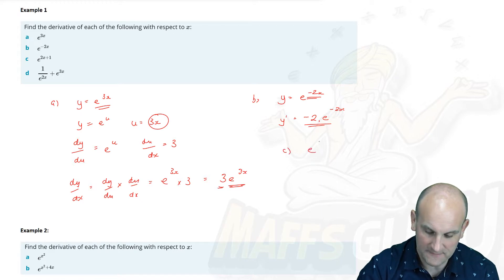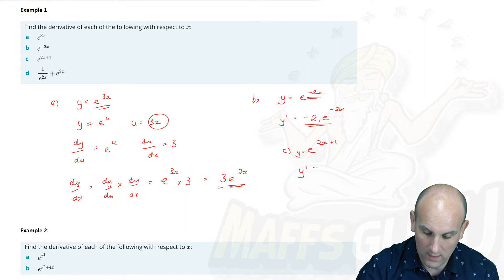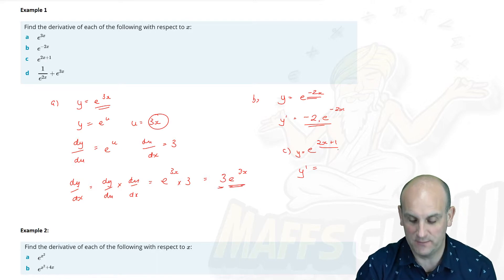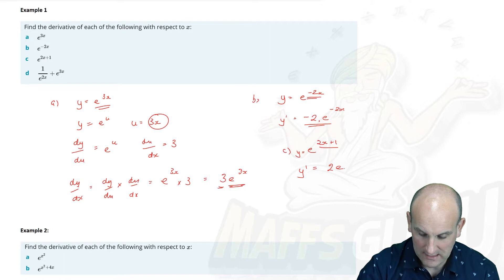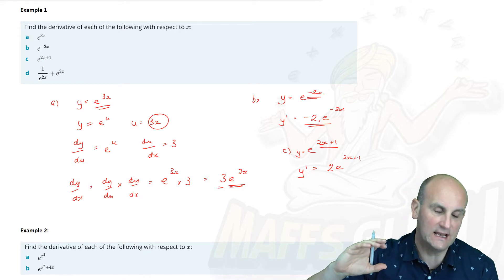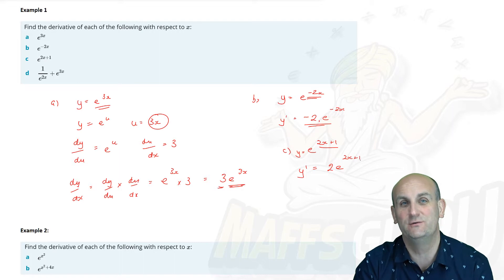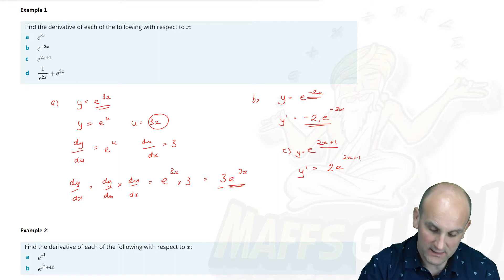See I've got e^(2x+1). Again if you want to do this using the chain rule please I encourage you to do it. But the rule happens again. y' is equal to the differential of the exponential power is 2 and just write e^(2x+1).